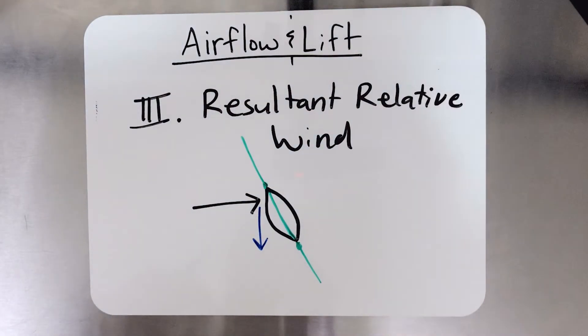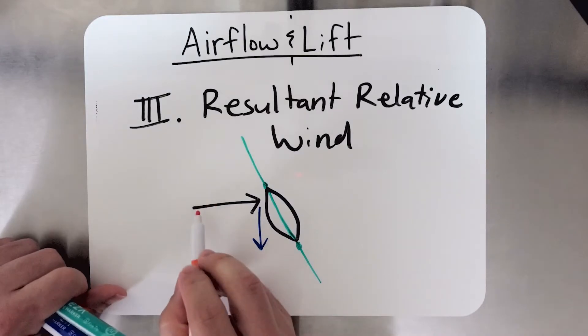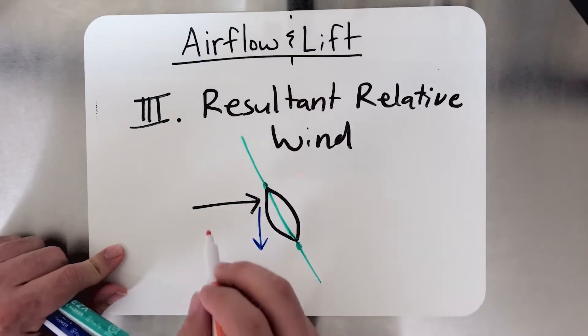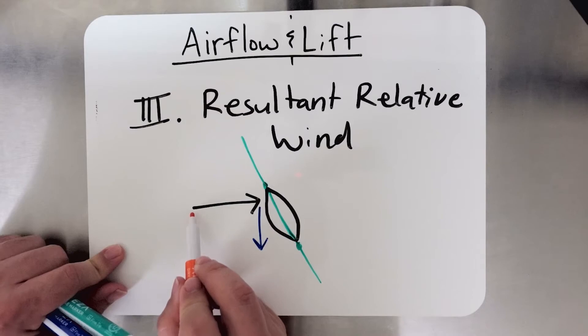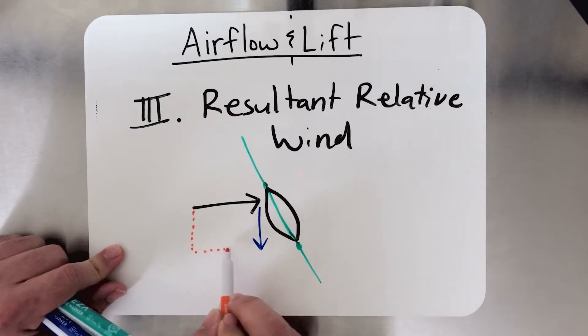Now if we also sum up these two vectors, the rotational relative wind and the induced flow, we're going to get another vector. It's very easy to visually sum up two vectors. You just kind of make a box out of these guys, and we get this vector.